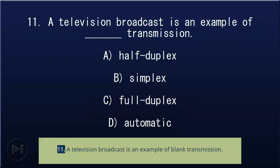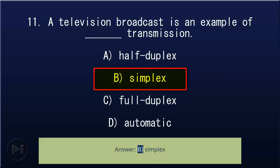11. A television broadcast is an example of blank transmission: A) half-duplex, B) simplex, C) full-duplex, D) automatic. Answer: B, simplex.